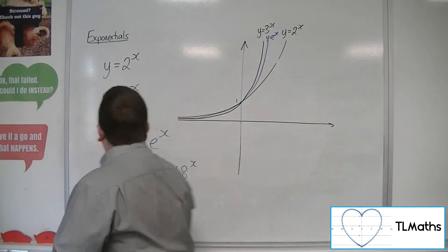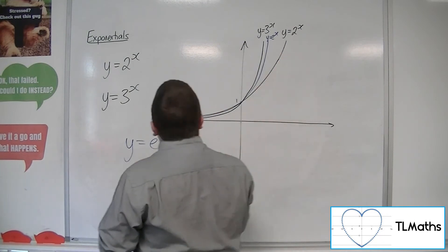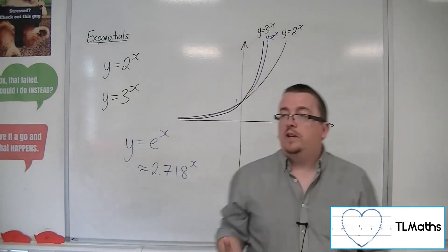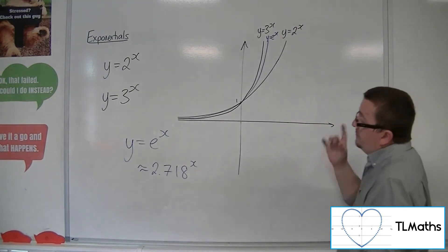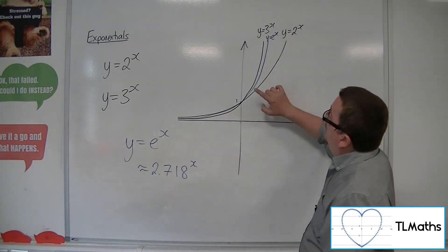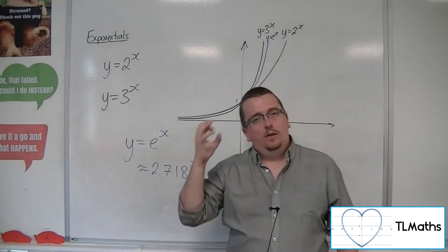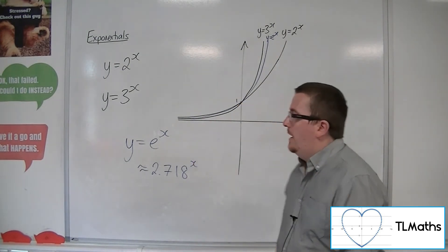So your y equals e to the x looks just like an exponential curve, as you would expect. However, it is just a little steeper than 2 to the x, just a little shallower than 3 to the x.